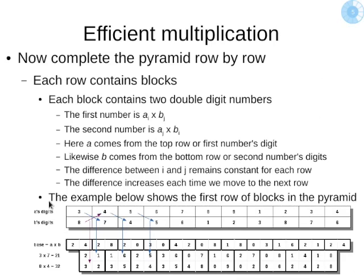Now, we construct the pyramid row by row. Each row in the pyramid contains two products. For example, in the first row, we put in two products — the product of the digits of the two numbers multiplied, spaced one apart.